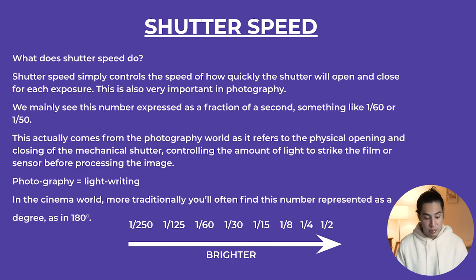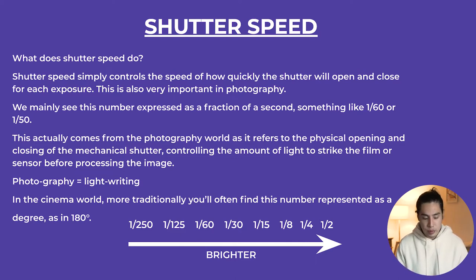As a term, photography literally means light writing — photo meaning light, graphite meaning writing. In the cinema world, we traditionally use the number represented as a degree — so 180 degrees — which we'll get into later. But since we'll be working with DSLR and mirrorless cameras, the 180-degree expression from the cinema world is not so critical, because we're working with smaller, more versatile cameras — not a big Arri or RED camera.